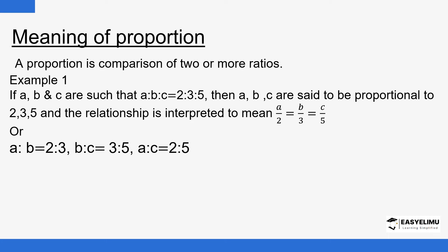Let's see examples of proportions. If a, b, and c are given such that a:b:c = 2:3:5, then a, b, and c are said to be proportional to 2, 3, and 5. In mathematics, this relationship is interpreted to mean that a/2 = b/3 = c/5.